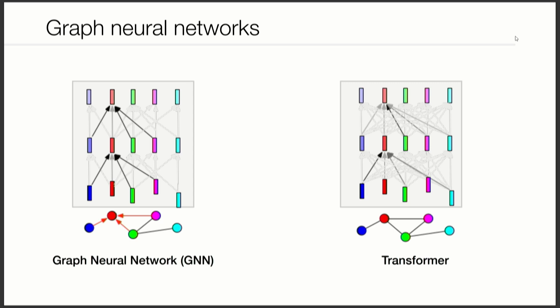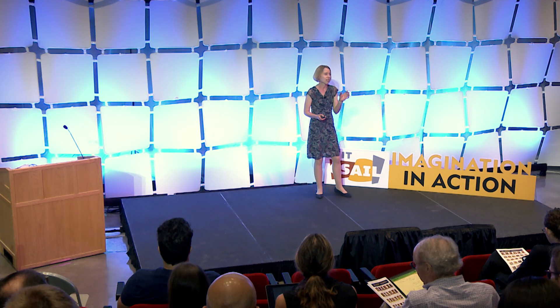Neural networks for such graphs are called graph neural networks, and there are basically two types: message passing graph neural networks and graph transformers. In both of these, what we are actually learning is pairwise interactions and how these pairwise interactions are processed at each node. That's the central operation.